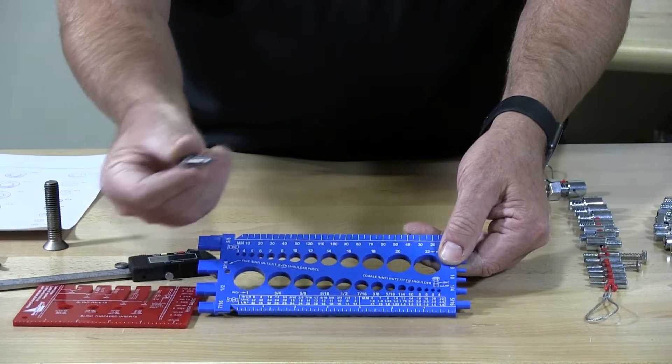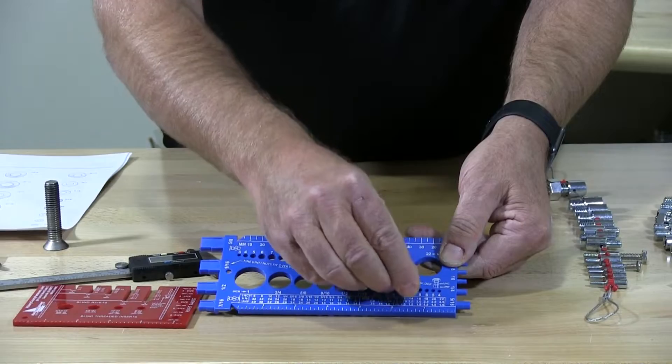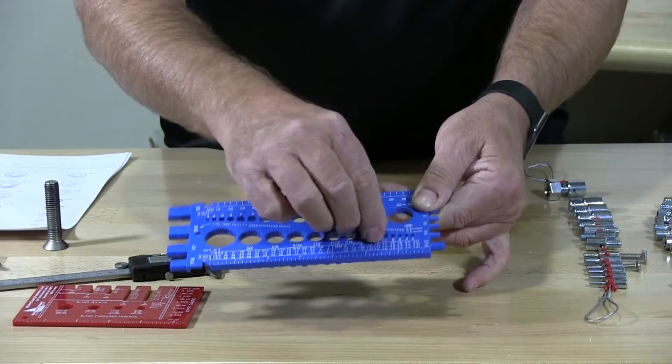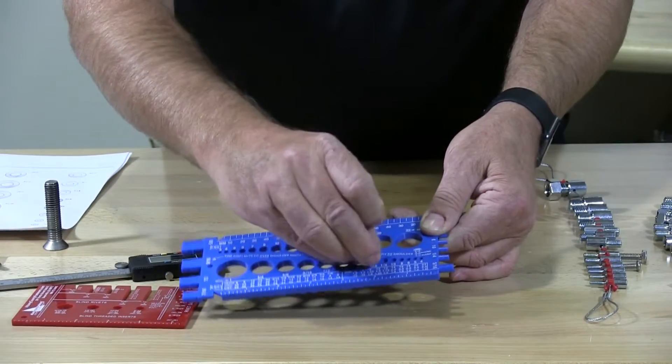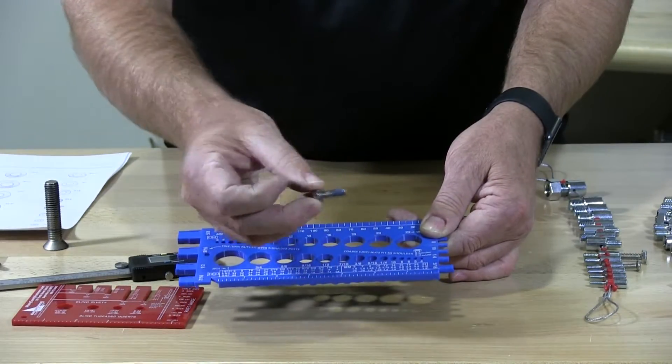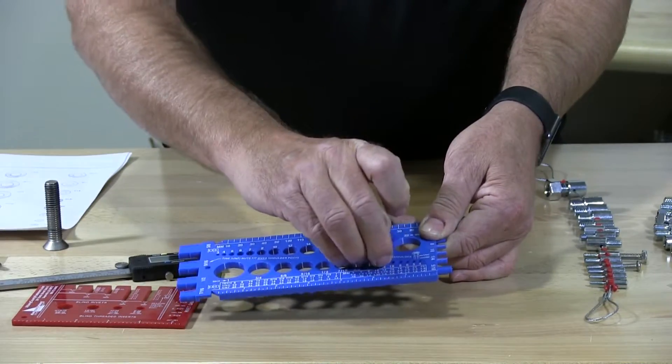So to measure this hex cap screw, I would go to look what hole it would slide in snugly. And we can see if it's in the ¼-20. This is the 5/16ths. It's too big. It's just slopping around in there. So we know that it's a quarter.